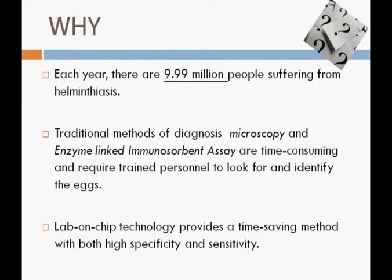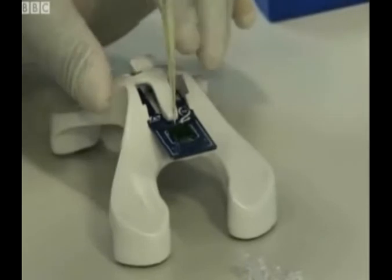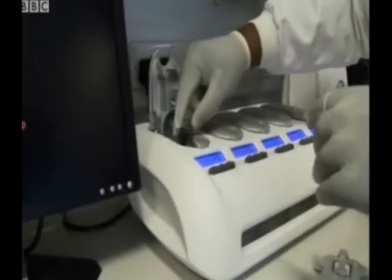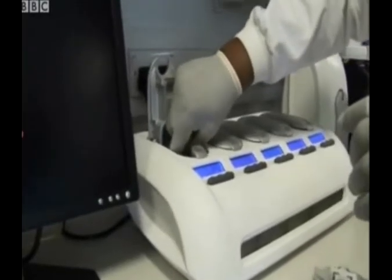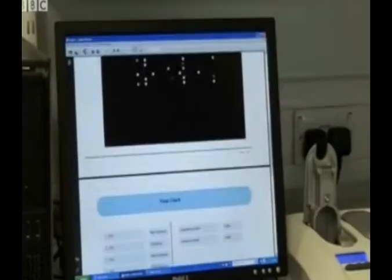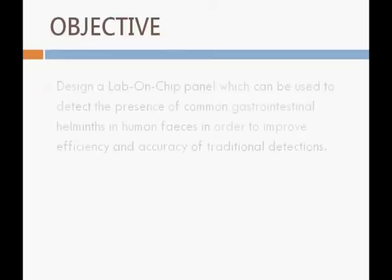The traditional diagnostic methods are time-consuming and require trained personnel to look for and identify the eggs. The lab-on-chip technology, on the other hand, has high specificity and sensitivity, requiring a low parasite load for detection and thus ensures timely administration of medication to infected individuals. It also eases the detection since an automated thermal cycling system, chip reader, and computer software were employed for determination of specific helminths.